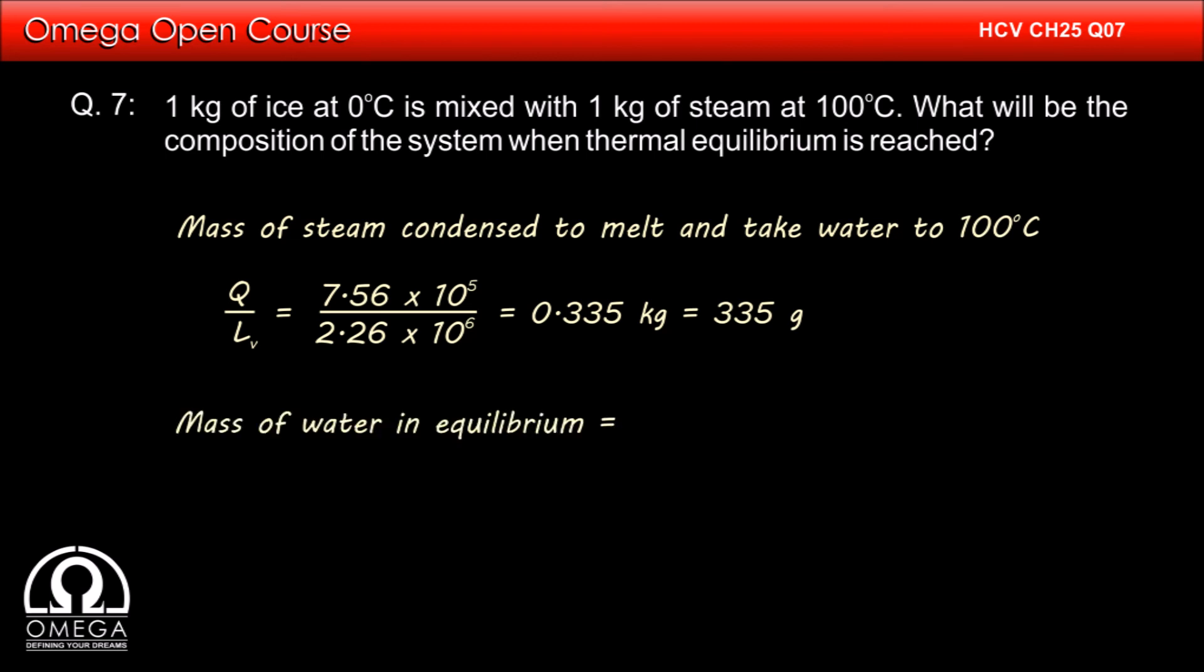Thus, the mass of water at equilibrium will be mass of ice that melted plus mass of steam that condensed. That is 1.335 kg. The steam remaining in the system is 1 kg minus 335 gram that is 665 grams. Since all the steam is not condensed, the final temperature of the mixture is 100 degree celsius. This is our answer.